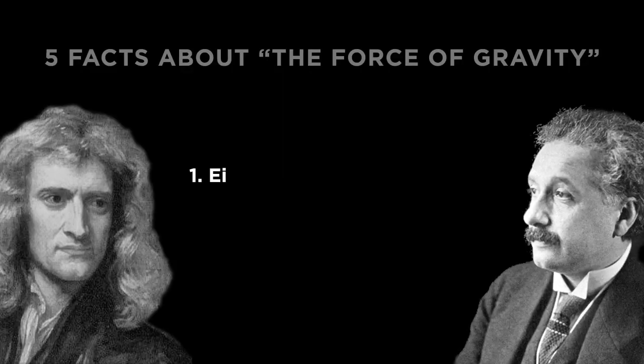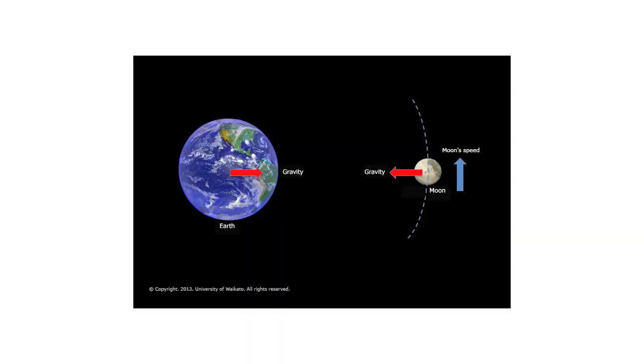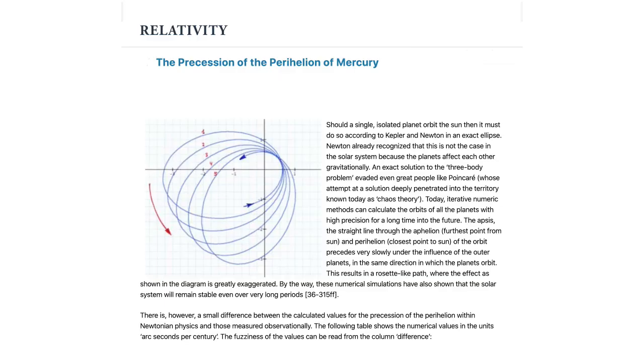Number one: Einstein's theory reduces to Newton's theory when masses and energies are small. For many applications, Newton is a useful approximation of what gravity does. If all you're doing is calculating the interaction between the Earth and the Moon at various distances, for example, Newton will do just fine. You get into trouble with things like Mercury's orbit though, because it's so close to the Sun.